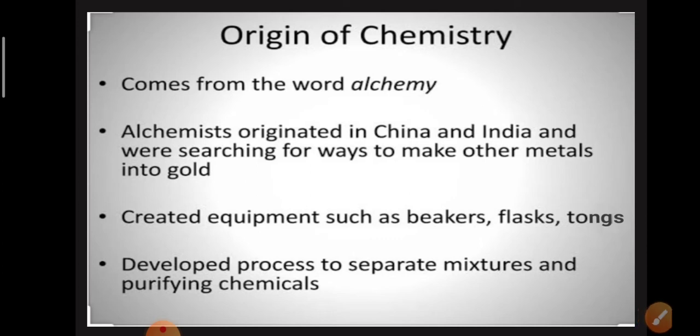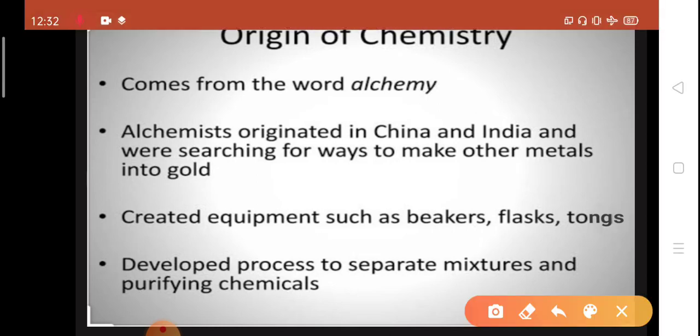Now, what is the origin of chemistry or how did the origin of chemistry take place? It comes from the word alchemy. Alchemists originated in China and India and were searching for ways to make other metals into gold. Their main aim was to change other metals into gold by their own magical method.